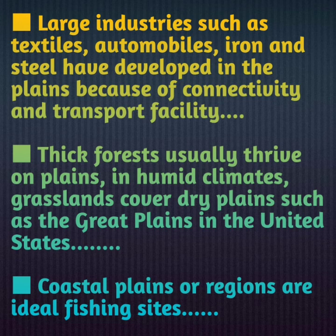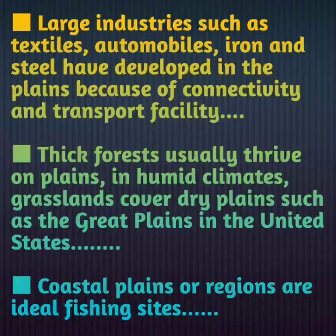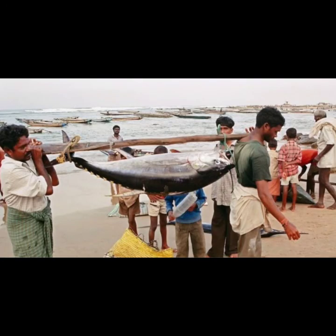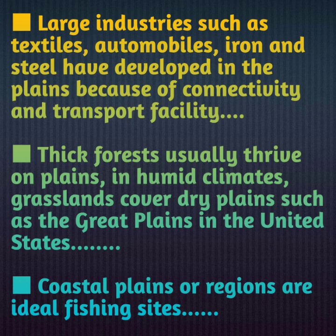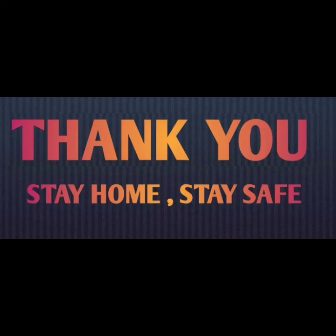Coastal plains or regions are ideal for fishing sites. As I mentioned, near India's coastline, the main occupation is fishing because fish are easily available there. After fishing, the next occupation is agriculture. Here I end my video; the remaining topics we will cover in our next video. Thank you, have a nice day.